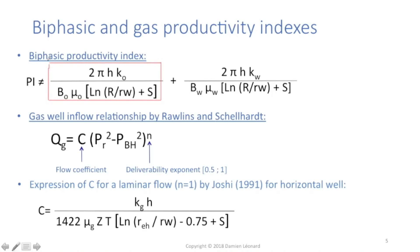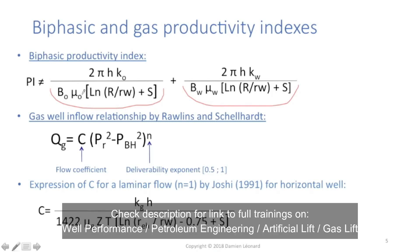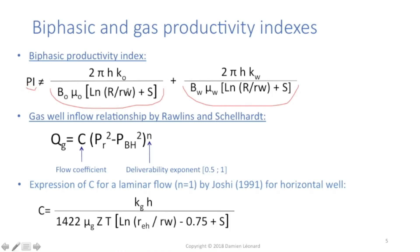Now, what do I do if I have a well that produces a mixture of oil and water? Over there, I have the productivity index for one well that would produce oil. And over there, the productivity index for one well that would produce water. One thing that I believed for a while is that in that case, my productivity index would be equal to the sum of those two productivity indices.